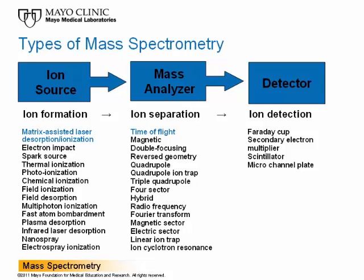Mass spectrometry requires an ion source, mass analyzer, and detector. There are multiple possible ion sources. In the past, ionization required molecules in the gas phase, limiting analysis to volatile compounds or those that could be rendered volatile. Large, non-volatile polar molecules such as proteins were not easily analyzed, and therefore mass spectrometry was not used for protein analysis. With the arrival in the late 1980s of matrix-assisted laser desorption ionization, mass spectrometry based on microbial proteomics became possible.